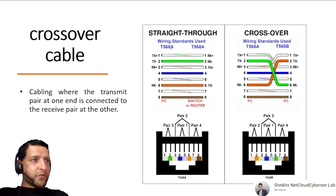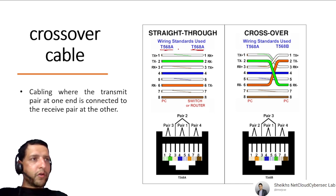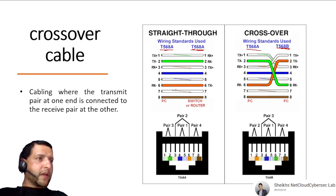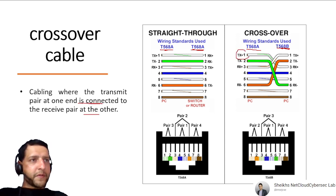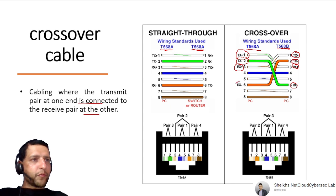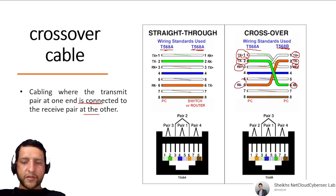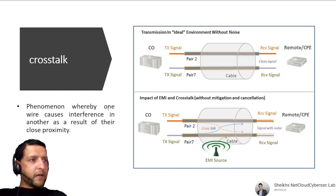A Crossover Cable has one end with TIA/EIA-568A and the other with TIA/EIA-568B, so the transmit pair at one end connects to the receive pair at the other. A Straight-Through Cable has the same standard on both ends. In a crossover cable, where one side transmits the other side receives, enabling communication between two similar devices. Crosstalk is a phenomenon where one wire causes interference in adjacent wires due to their close proximity — like hearing someone else's conversation on your phone.